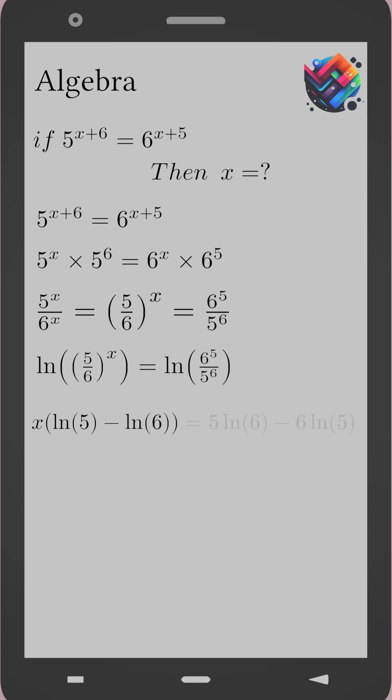x times open parenthesis ln 5 minus ln 6 close parenthesis equals 5 ln 6 minus 6 ln 5. Finally, solve for x.